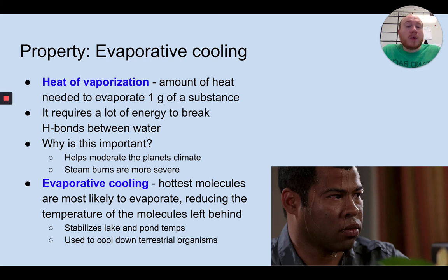Evaporative cooling is where the hottest molecules are more likely to evaporate, reducing the temperature of the molecules left behind. When a hot molecule leaves, it tends to pull some energy with it, which cools the molecules around it. This is what helps stabilize lake and pond temperatures. So as it gets hot outside, the water in a lake or a pond might be getting evaporated on the surface, which causes the water to go down, but it also cools off the water near it.